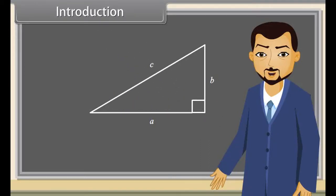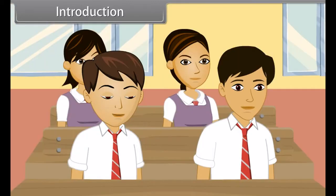Students, this is a right-angled triangle. Can you tell which side is the hypotenuse? C! C is the hypotenuse.